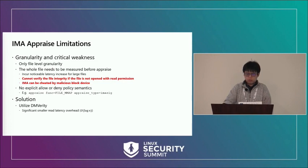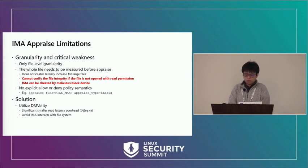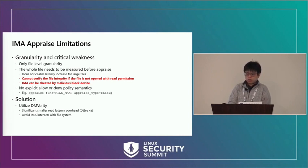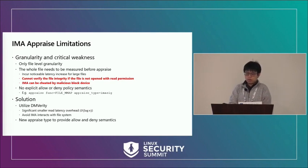The benefit here is we get significantly smaller read latency overhead, thanks to the hash tree of DM-verity. Also, by using DM-verity, IMA avoids interacting with the file system directly. The actual integrity protection is delegated to DM-verity, which operates at the block device level and performs verification on every disk operation. We also added two new appraised types to let the policy make allow or deny decisions directly.